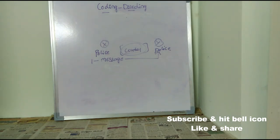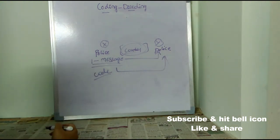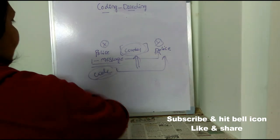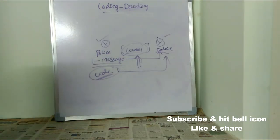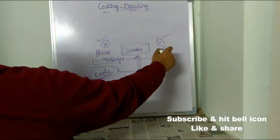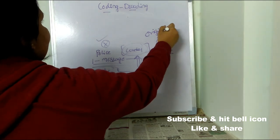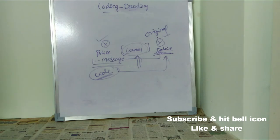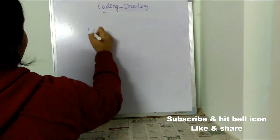If the courier person opens the letter and reads it, he should not be able to understand the message, because it is strictly confidential — confidentiality must be maintained. So the first policeman will code the message before sending it, so that anyone who opens it cannot understand it. The original code will only be known by X and Y. Once the message reaches the second policeman, he will decode it and get the original message.